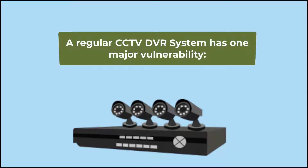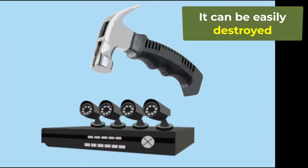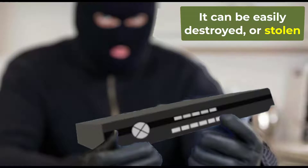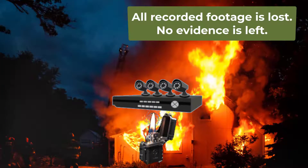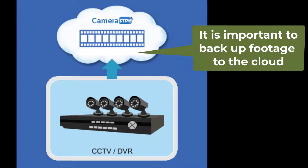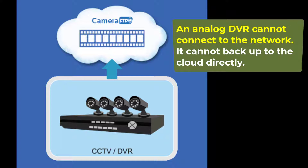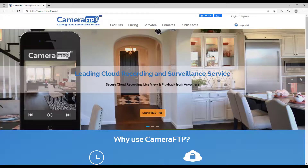A regular CCTV DVR system has one major vulnerability: it can be destroyed or stolen easily, and you lose all recorded footage — you cannot find out what happened and there is no evidence left. It is very important to back up security camera footage to a remote location such as a cloud-based storage service. However, if a camera or DVR is analog, it cannot connect to the network, so it cannot back up to the cloud directly.